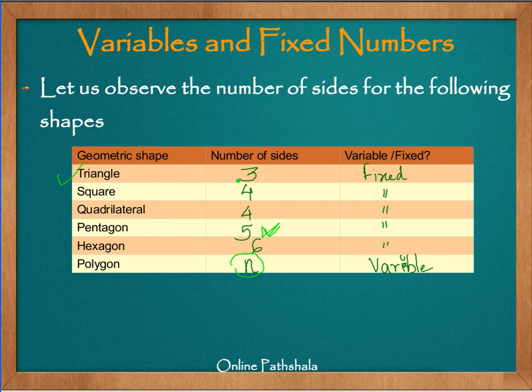So this is one of the examples which explains to you the difference between variable and fixed number. When we are considering a fixed number, there is no ambiguity - it simply means that number has a fixed value without any doubt. But when we go for a polygon, it can take on different values as is shown here.